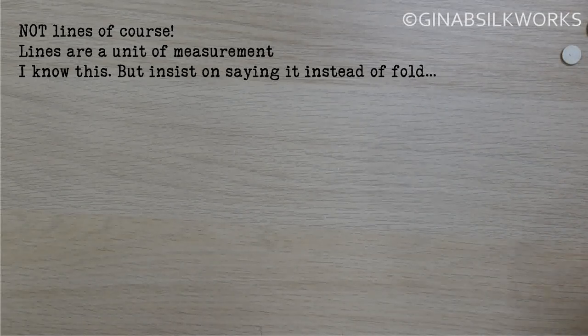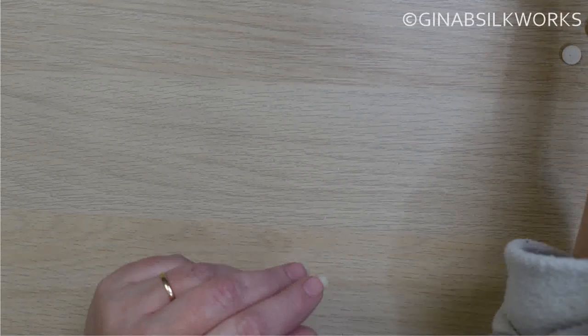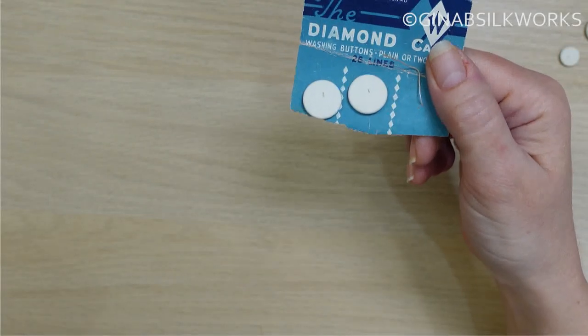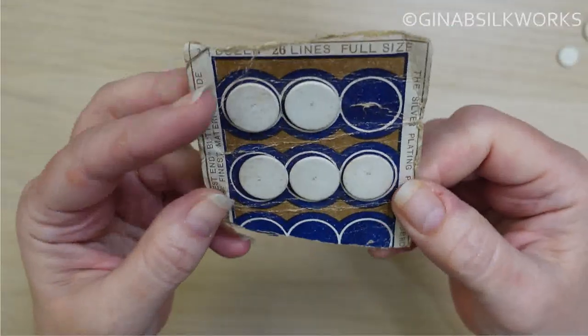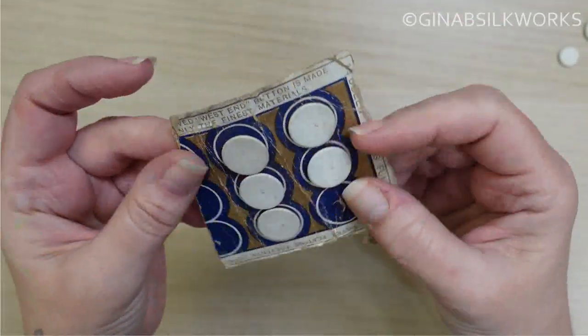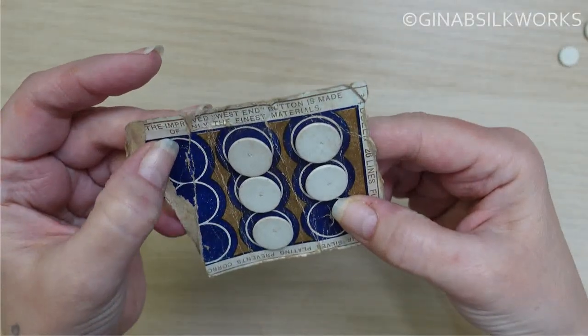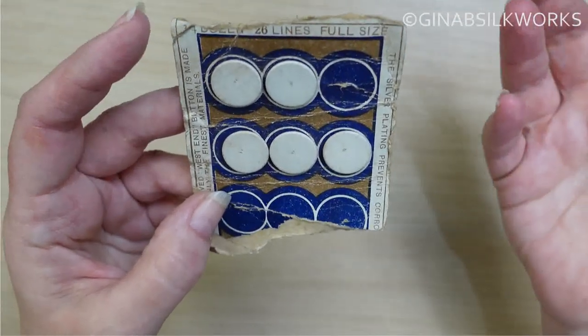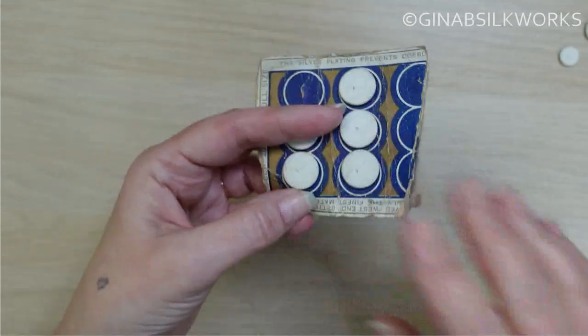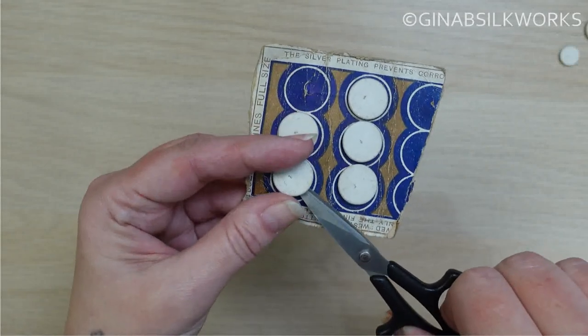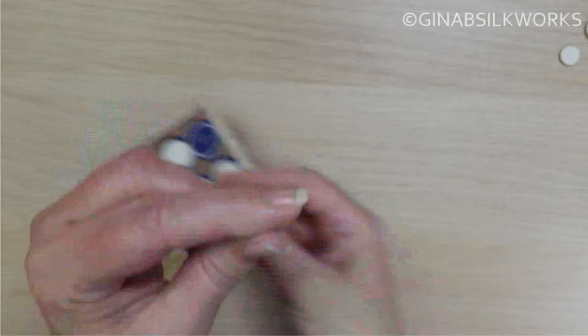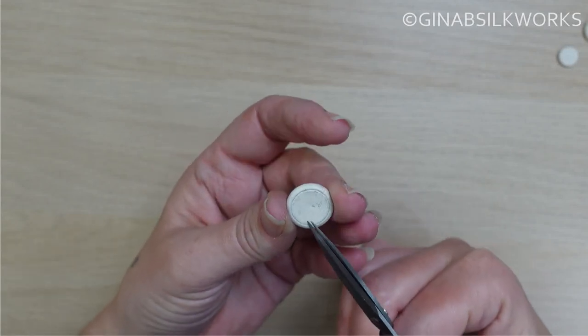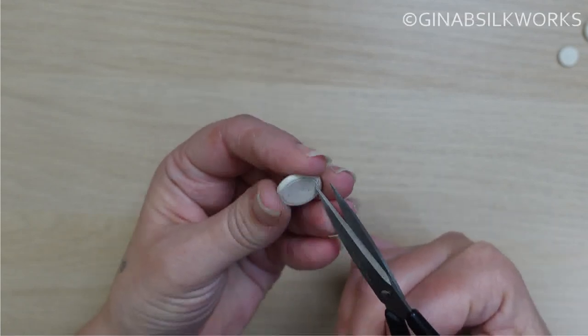The last one to take a look at - shall we do the diamond or the West End button? Let's take a look at the West End button, simply because it says the silver plating prevents corrosion. The card doesn't say how many layers it is. It definitely picked up the blue from the card or it's a bit of corrosion. That's interesting. We'll start with the back as before.